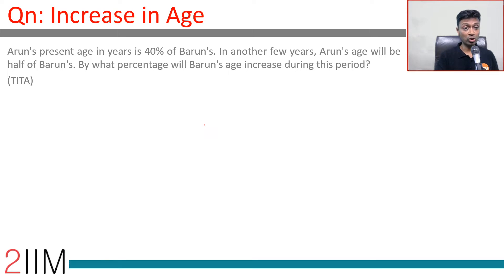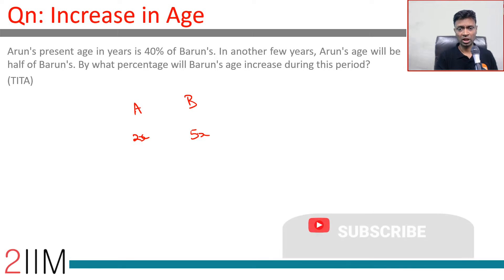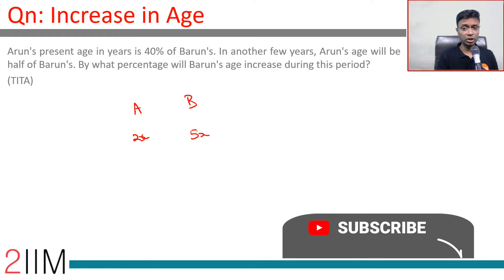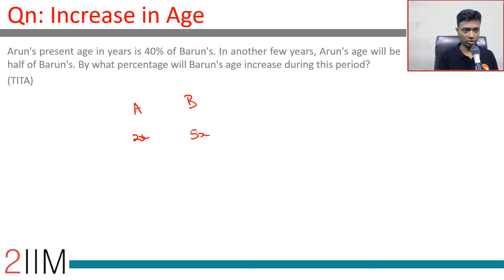Arun's present age is 40 percent of Barun's. So if Arun's age is 2x, Barun's age is 5x. In another few years, Arun's age will be half of Barun's age.